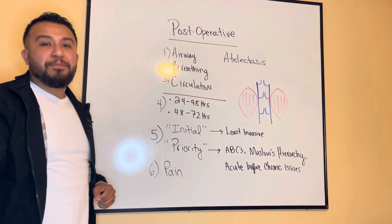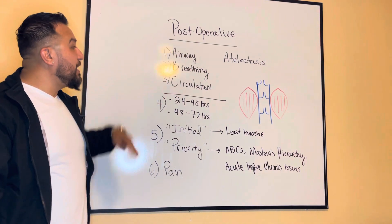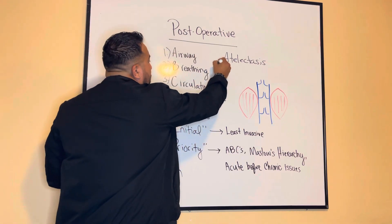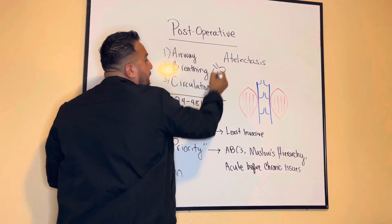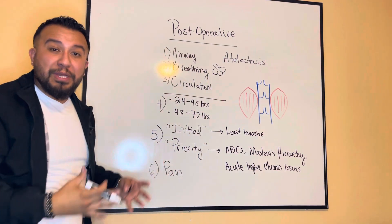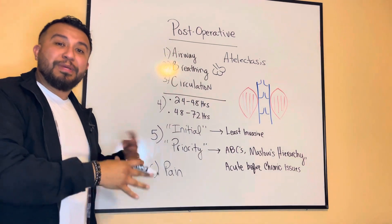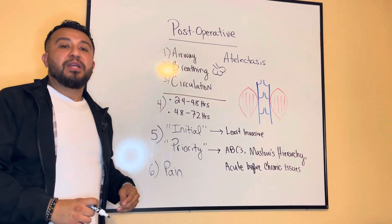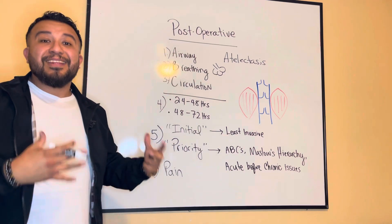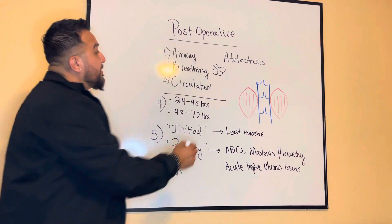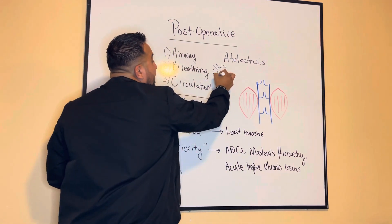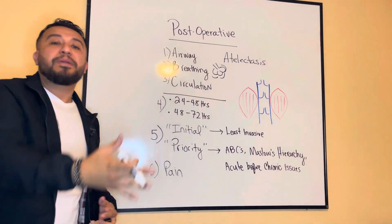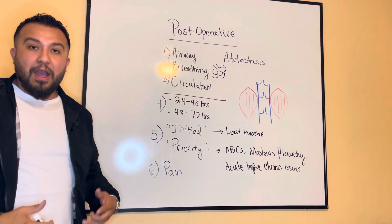That's why we have the patient cough. We have the patient deep breathe to expand the alveoli, which have been sitting there with potential fluids and mucus within the confines of the tissues. So we have the patient cough, deep breathe, and utilize the incentive spirometer to expand the alveoli and promote gas exchange — the elimination of carbon dioxide and the intake of oxygen.